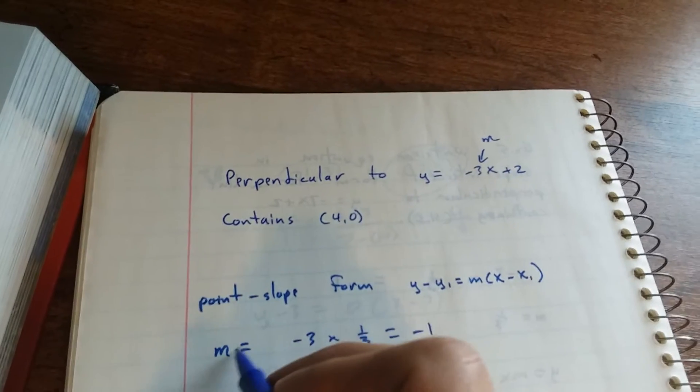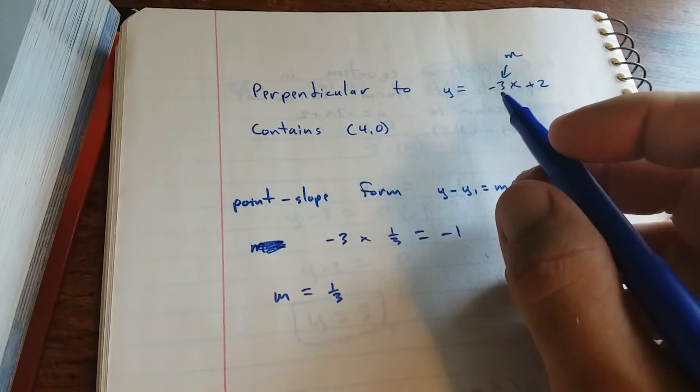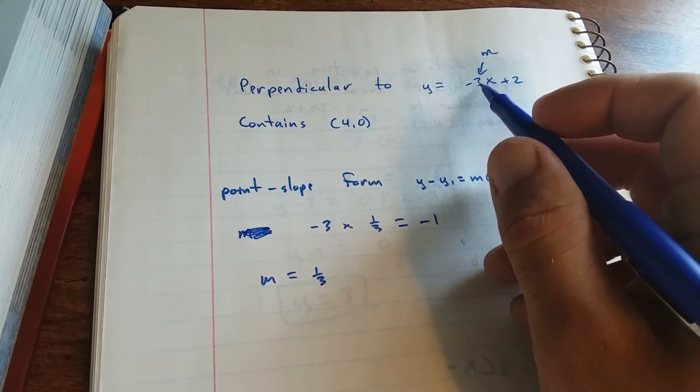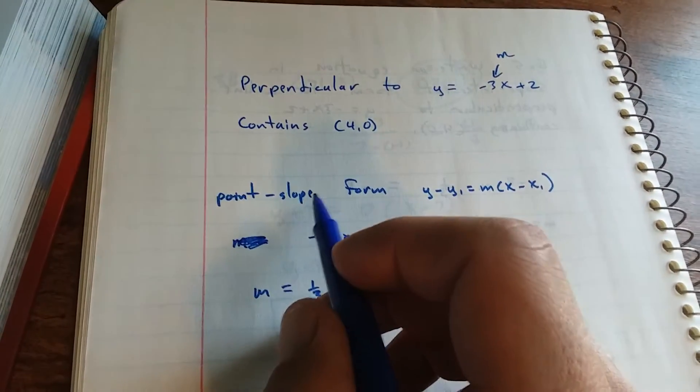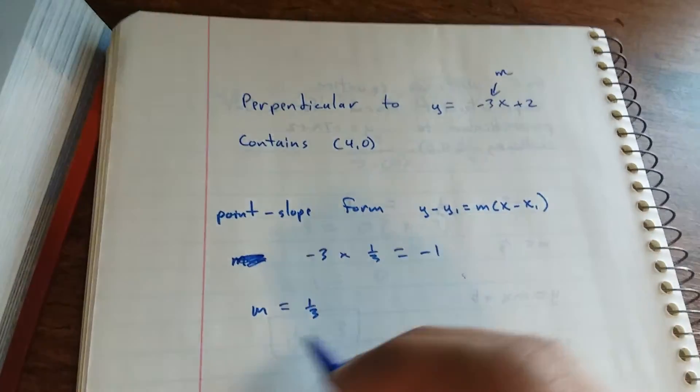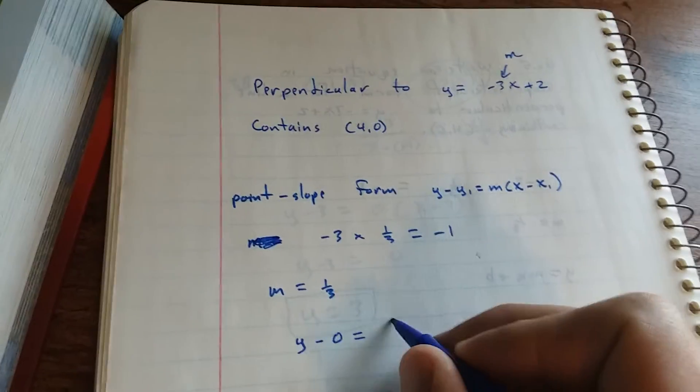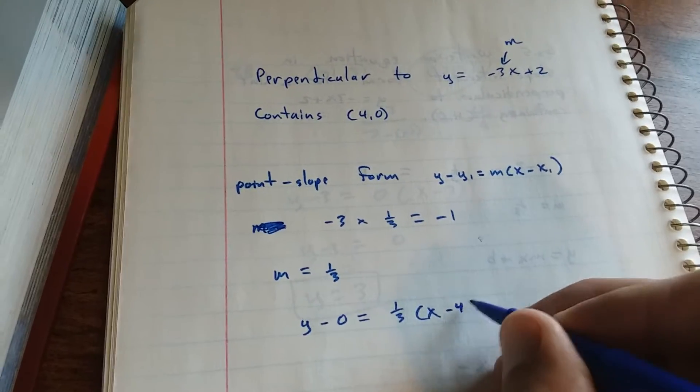So m equals 1/3 for the new line. The line perpendicular to this is going to have the negative reciprocal for a slope, so it's going to be 1/3. You're going to use point-slope form first. So you have y minus 0 equals 1/3 times x minus 4.